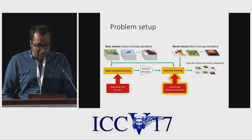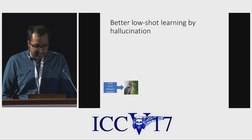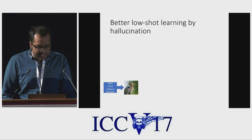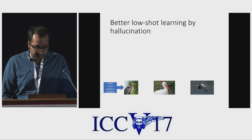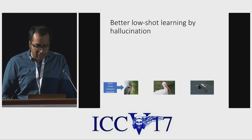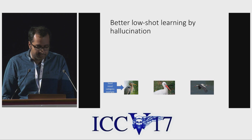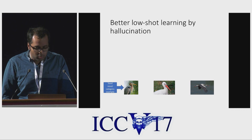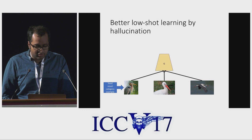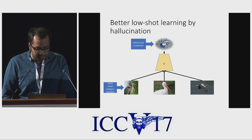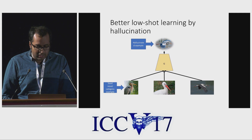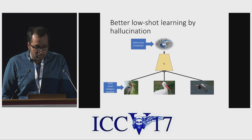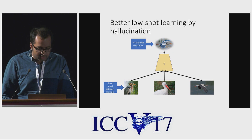To hallucinate additional examples for a novel category, we start from a seed training example for the novel category. We then sample a pair of examples from a base category. This pair represents a transformation or a mode of variation — here, the transformation between perched birds and flying birds. We then try to apply this transformation to the novel category seed example. We do this using a small neural network that takes the triplet of examples as input and produces the hallucinated novel category example as output. To make things simple, we do this hallucination in feature space. An alternative view is that the model G completes the analogy between storks and herons.